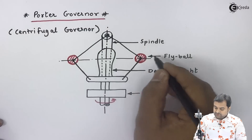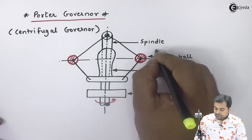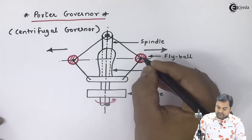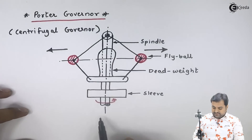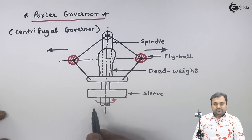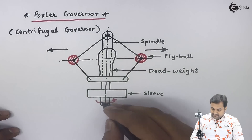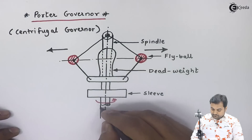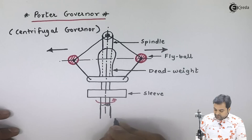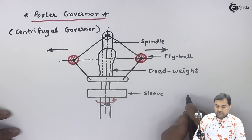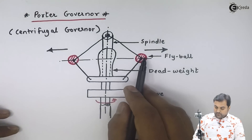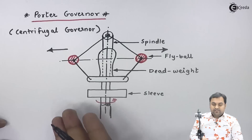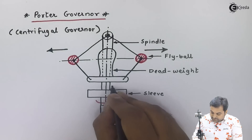When the engine speed increases, these fly balls move outwards. The governor is directly connected to the crankshaft, and when the engine speed increases the fly balls move outwards. There is a mechanism through which the shaft of the governor is connected directly to the engine fuel supply — this portion would go and control the engine fuel supply. When the fly balls move in the outward direction, this sleeve moves up.